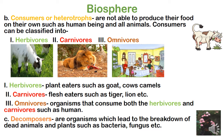Omnivores have qualities of both herbivores and carnivores — they are both plant eaters and flesh eaters. An example is humans — we eat plant-based food as well as flesh. So consumers are: herbivores, carnivores, and omnivores.